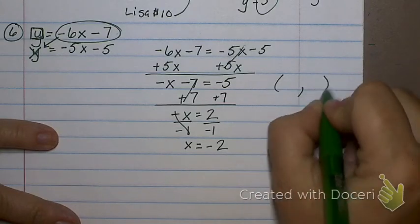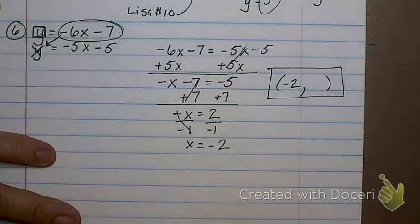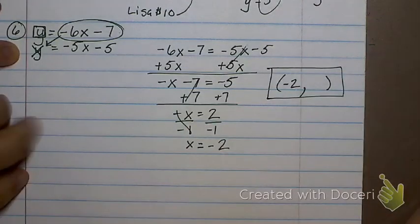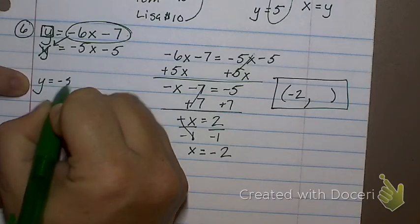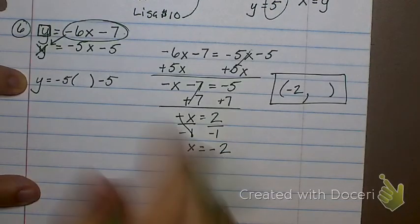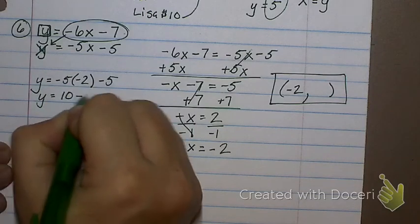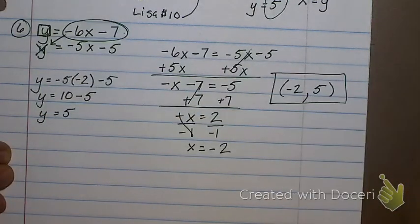So in my answer, the first number is negative 2. How do I find the second answer? Plug it in. Does it matter where I plug it in? No. It actually doesn't here, because I didn't change either of the equations. So I can pick whichever one looks like it has easier numbers. I'm going to pick the second one. y equals negative 5x minus 5. And what am I plugging in for x? Negative 2. Well, negative 5 times negative 2 is positive 10 minus 5. So what does y equal? 5. So my final answer is negative 2, 5.